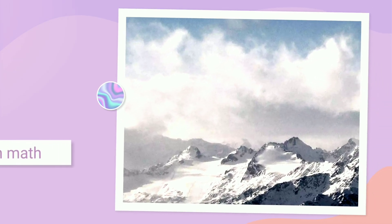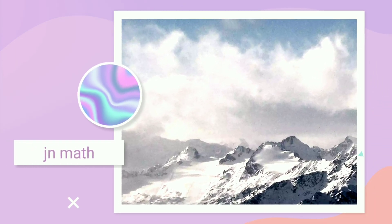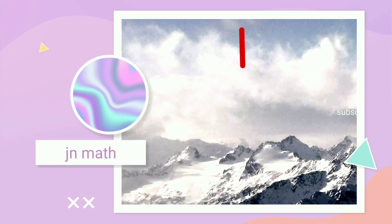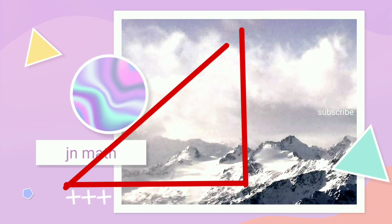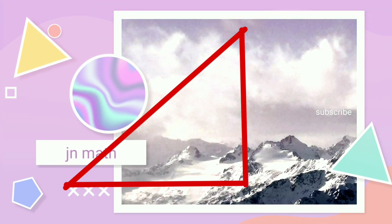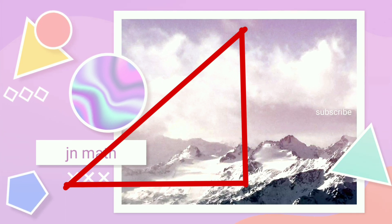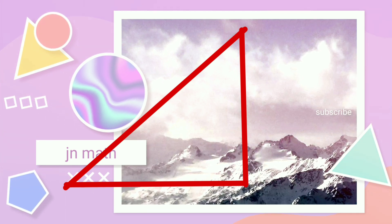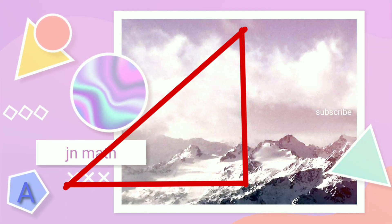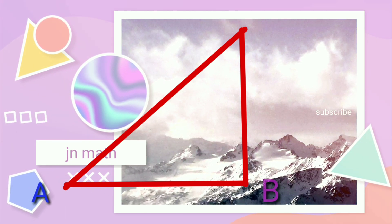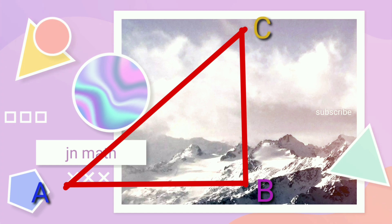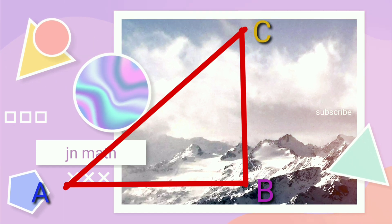To prove this, first you need to consider a right-angled triangle. Let me take a right-angled triangle ABC. It is right-angled at B.